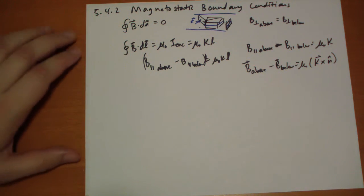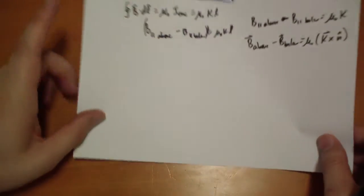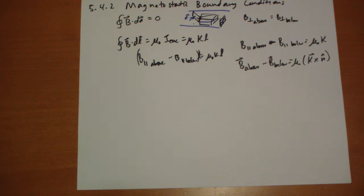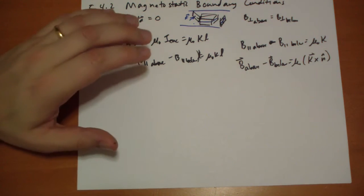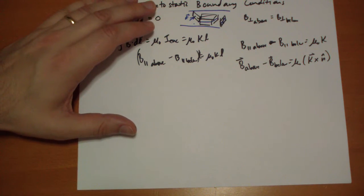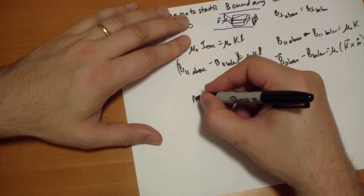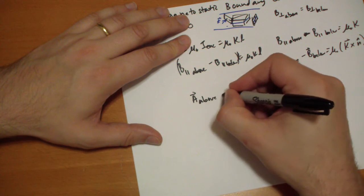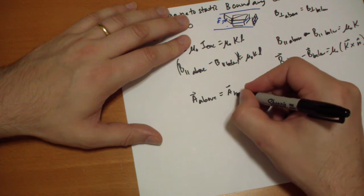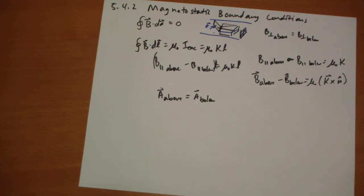Alright. The A vector, what does it do? Well, the A vector is not going to change as we cross that boundary. Let me see if I can give a good explanation of why this is.